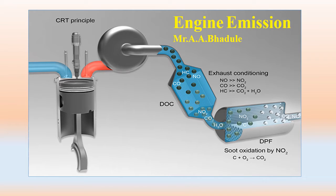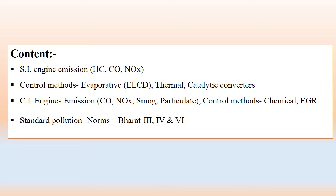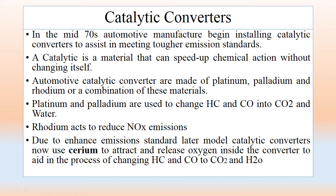Hello friends, welcome to lecture number five for chapter number eight on alternative fuel and exhaust emissions. In the previous four lectures we discussed different alternative fuels, their suitability for SI and CI engines, emissions from SI and CI engines, and emission control systems namely the thermal reactor, PCV system, LCD, and EGR system. Today we are going to discuss catalytic converters, emission norms, and standard emission norms.